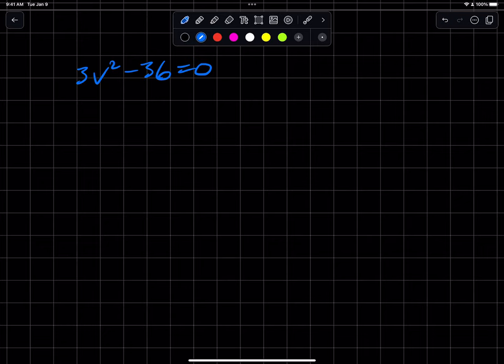So the straightforward part of this problem asks us to use the square root property to determine all real solutions for each of the following equations. It gives us two equations. We're going to do one for the purposes of this video, just to review the quote square root property.